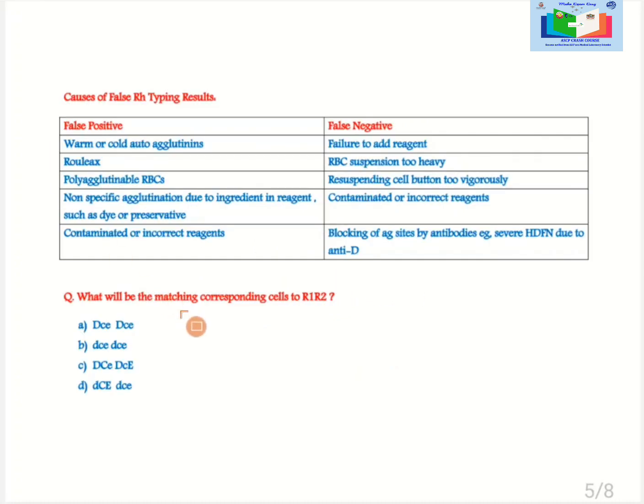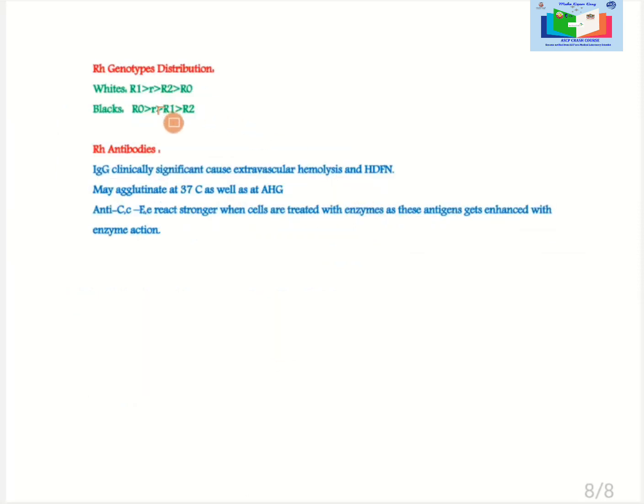Let's now come back to the questions. So if we here look into the questions so what will be the matching corresponding cell to R1 and R2. As now we learned that R represents the capital D and the 1 represent the capital C and the 2 represent the capital E. So here in option number A there is a capital D but no capital C and E. So option A is not correct. If we look into option number B so there is a small d so the option number 2 is also incorrect. But if we look into option number C, R represents the capital D and 1 represents the capital C. Again R represents the capital D and 2 represents the capital E. So option C is correct.